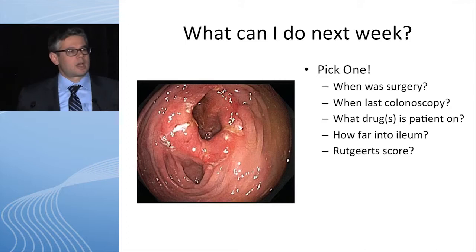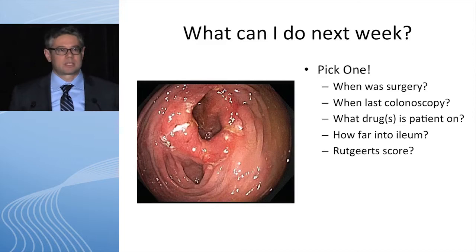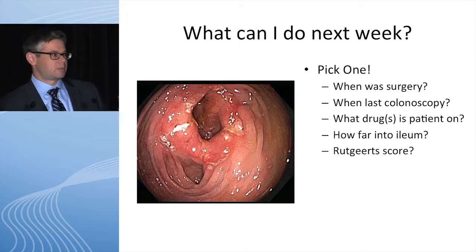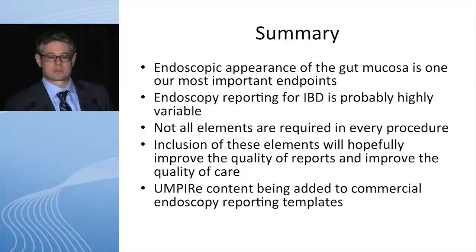I want to end by saying: what can we do now? What can we do next week with our next colonoscopy? The answer is you can do anything — pick one thing and start with that. The next time you see an ileocolonic anastomosis, describe it in a way that gives more detail and more granularity in the report so that others can understand what it was that you were looking at. When was the last surgery the patient had? When was the last colonoscopy evaluating this? What drugs is the patient currently on? How far did you get into the ileum? Get comfortable with these scoring systems — they're very easy to use and help others who see your reports understand what it was that you were actually looking at.